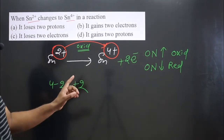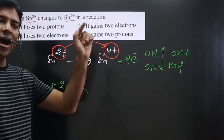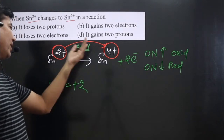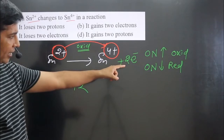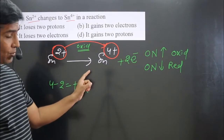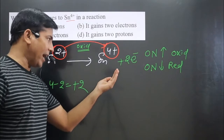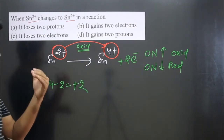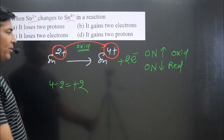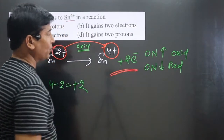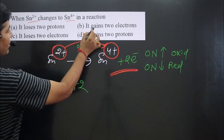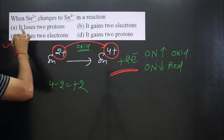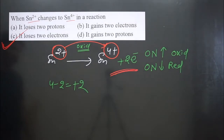In a reduction reaction, we always add electrons on the left side. Adding electrons on the right side shows loss of electrons, and adding electrons on the left side shows gain of electrons. So it is losing two electrons. That is why the option 'loses two protons' or 'gains two electrons' is incorrect — it is losing two electrons. This is an oxidation reaction with loss of electrons.